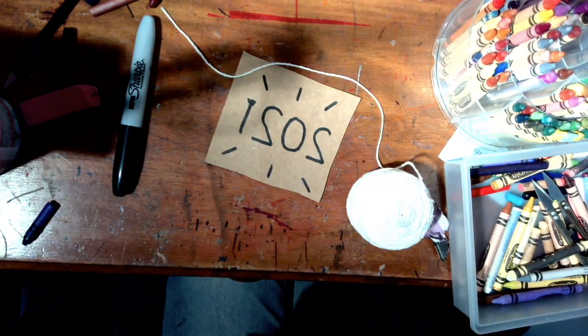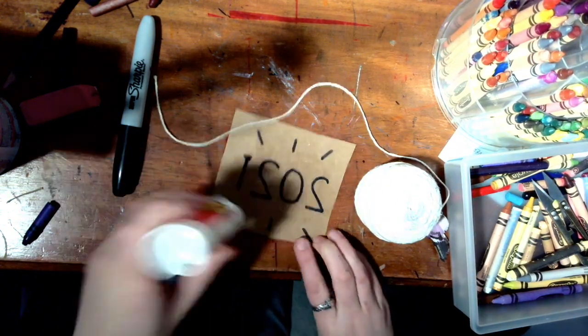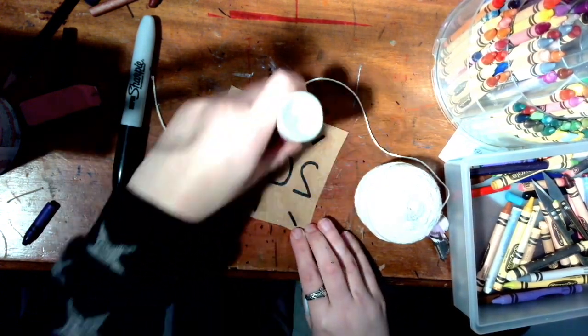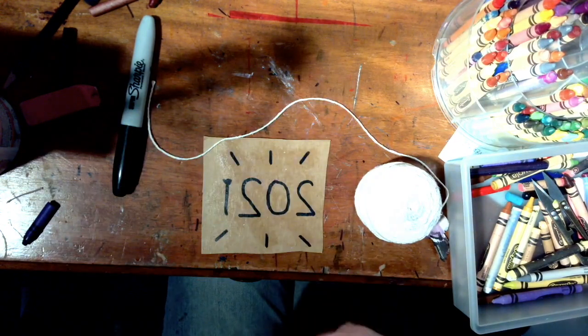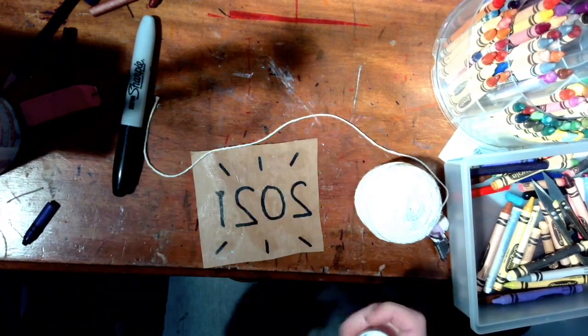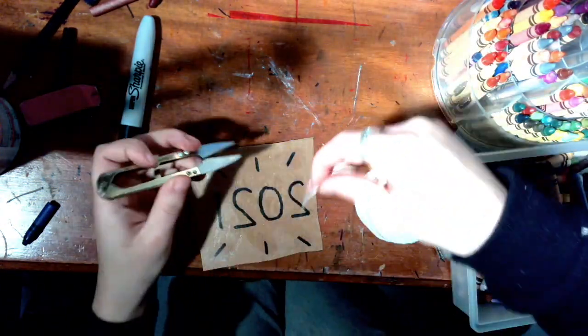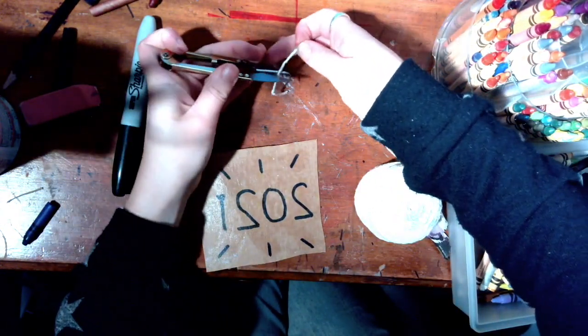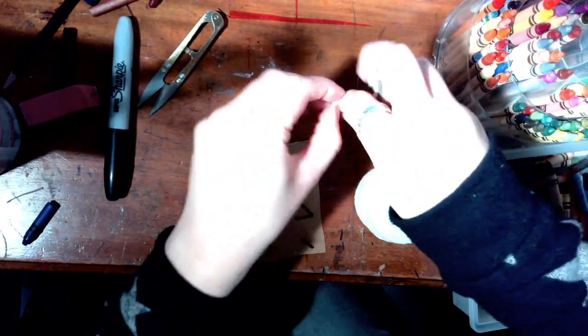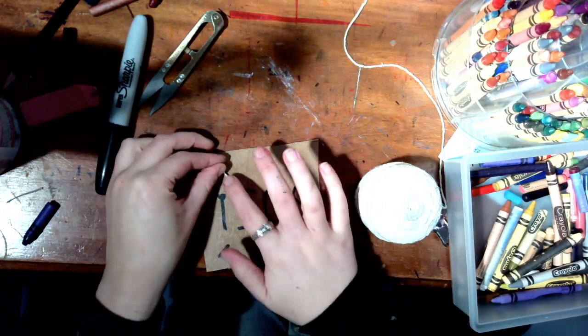So this is just some regular twine. I'm coating my whole piece of cardboard with some glue so that I can go ahead and take my string, cut it into the size of the pieces I need, and attach it right there.